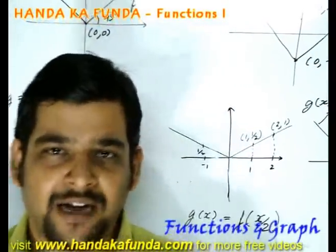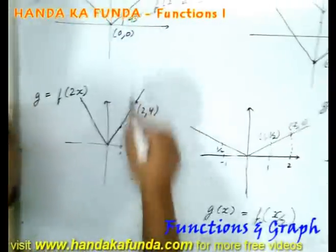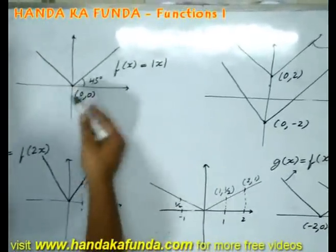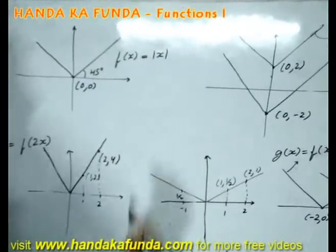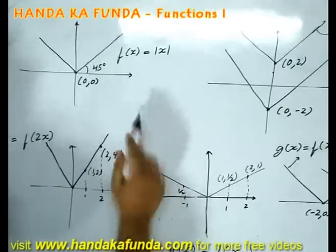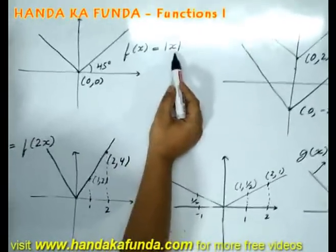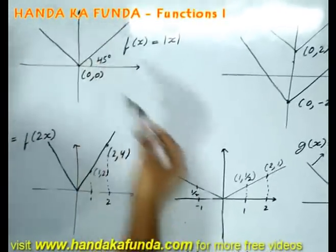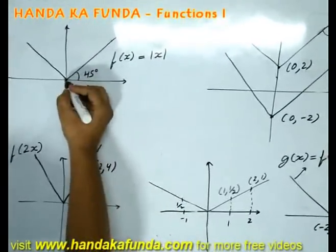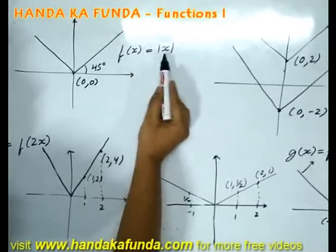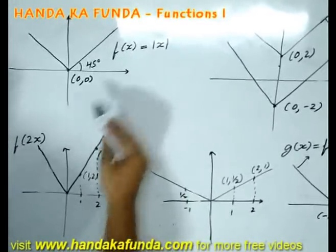Let us have a look at a few graphs. Suppose I am given the graph of f(x) equals mod x, that is the absolute value of x. This is something that it will look like. f(x) is going to be positive whatever be the value of x. That means it will be x when x is positive and it will be minus x when x is negative. The point here is origin and it is bound to pass through the origin because f(0) is 0.